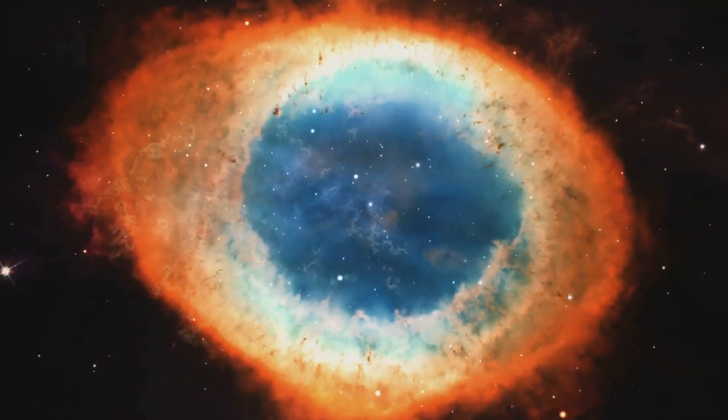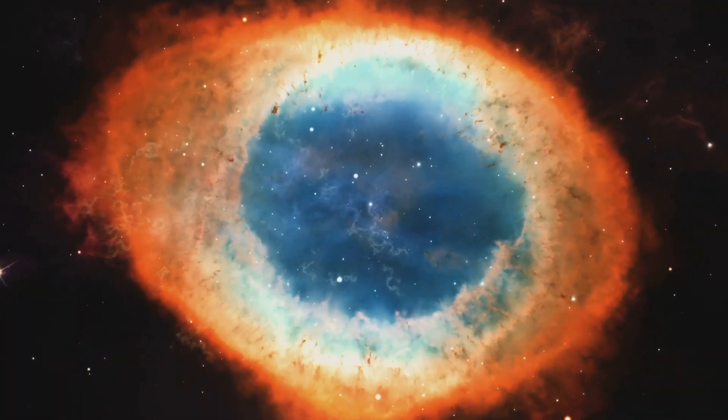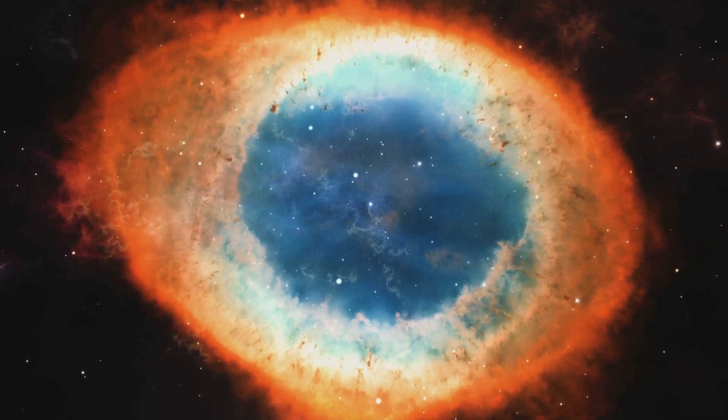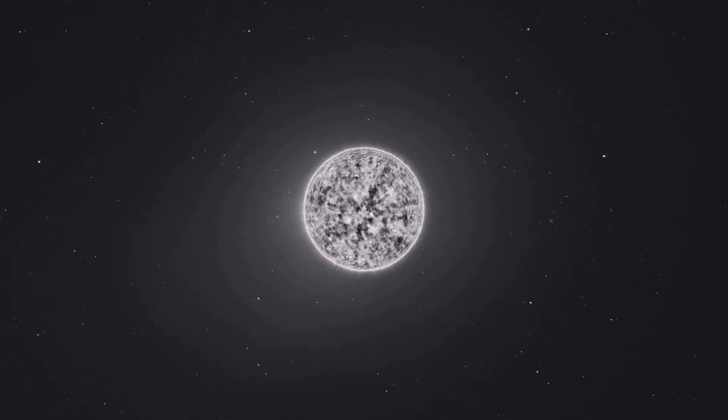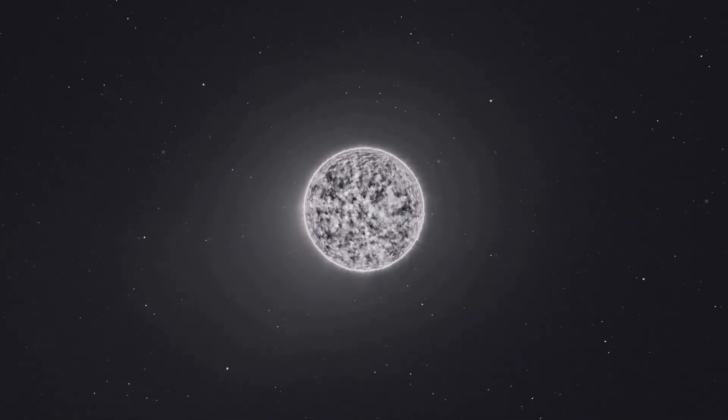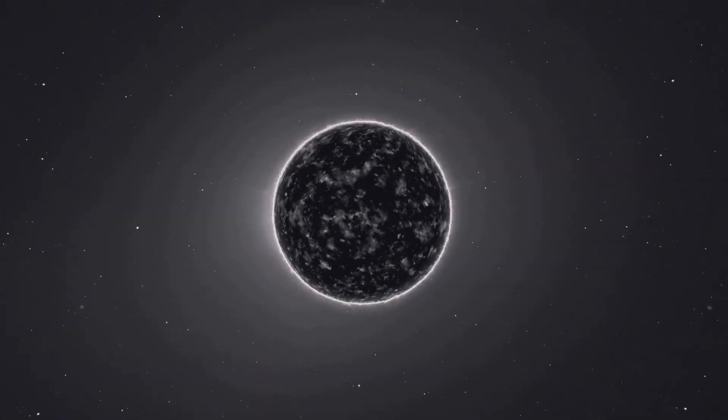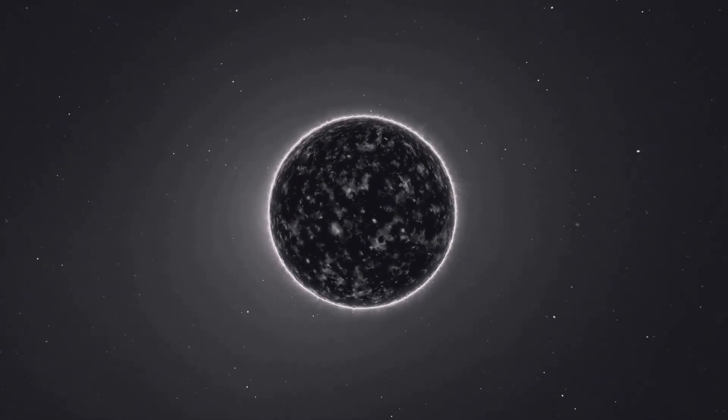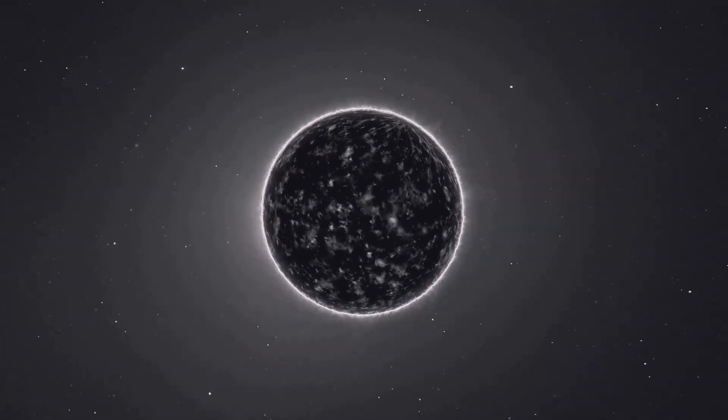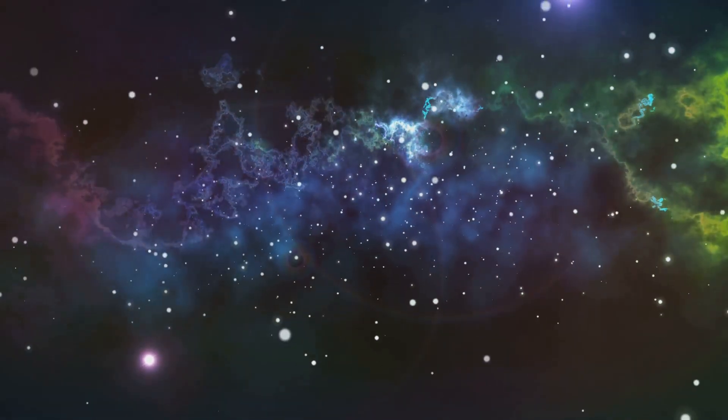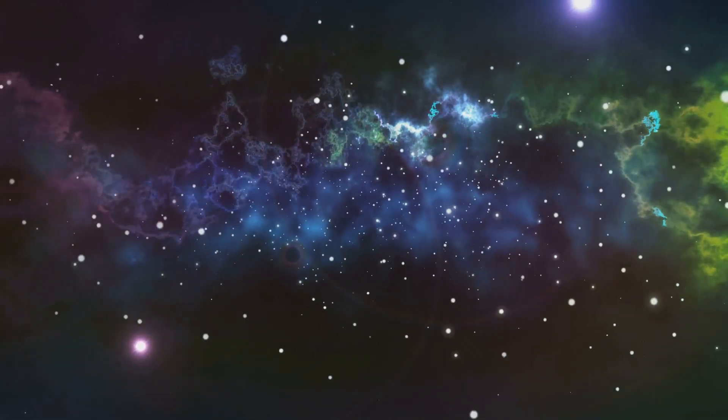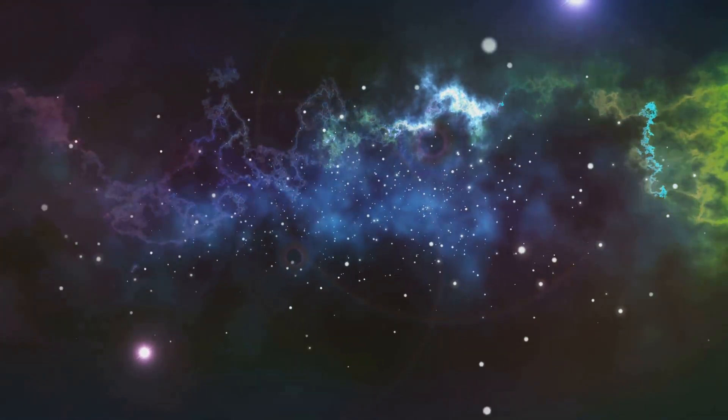The outer layers of the Sun will be expelled into space, creating a stunning planetary nebula, a cosmic masterpiece of glowing gas and dust. At the center of this celestial spectacle will remain the Sun's core, a dense hot remnant known as a white dwarf. This stellar ember will slowly cool over trillions of years, eventually fading into a cold, dark black dwarf. The once mighty star that illuminated our solar system will have reached the end of its life cycle, leaving behind a legacy of cosmic dust and stellar remnants.